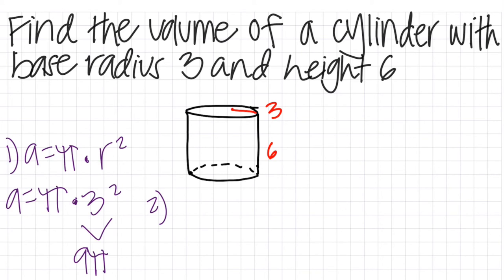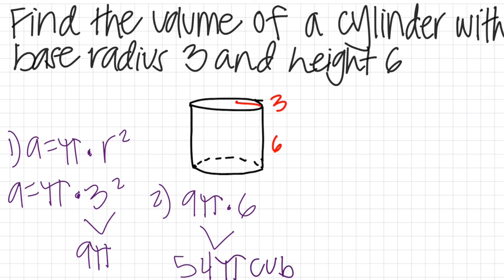The next step is to apply the area of the circle and multiply it by the height of the cylinder. We multiply 9π by 6 and get a total volume of 54π cubic units.